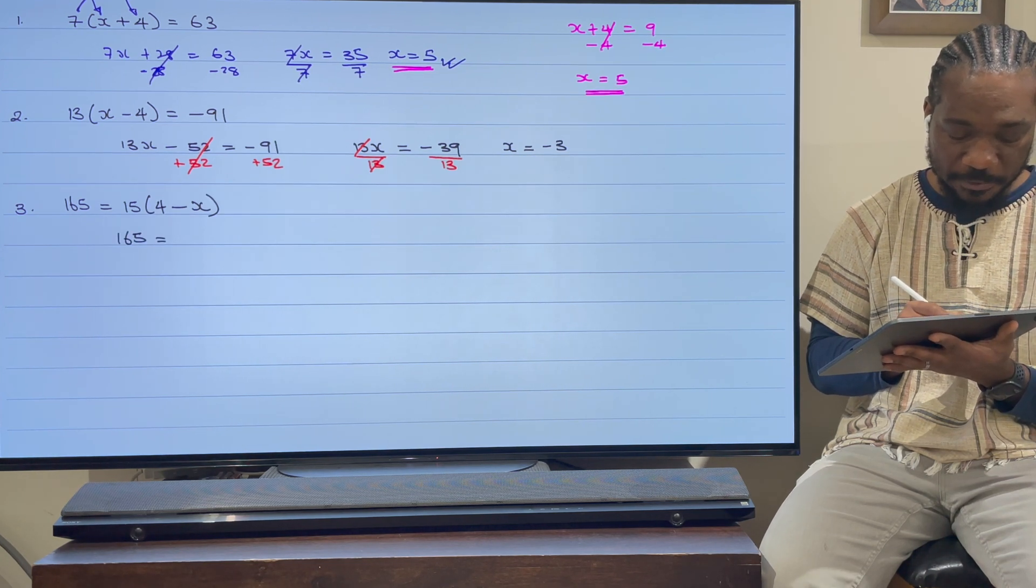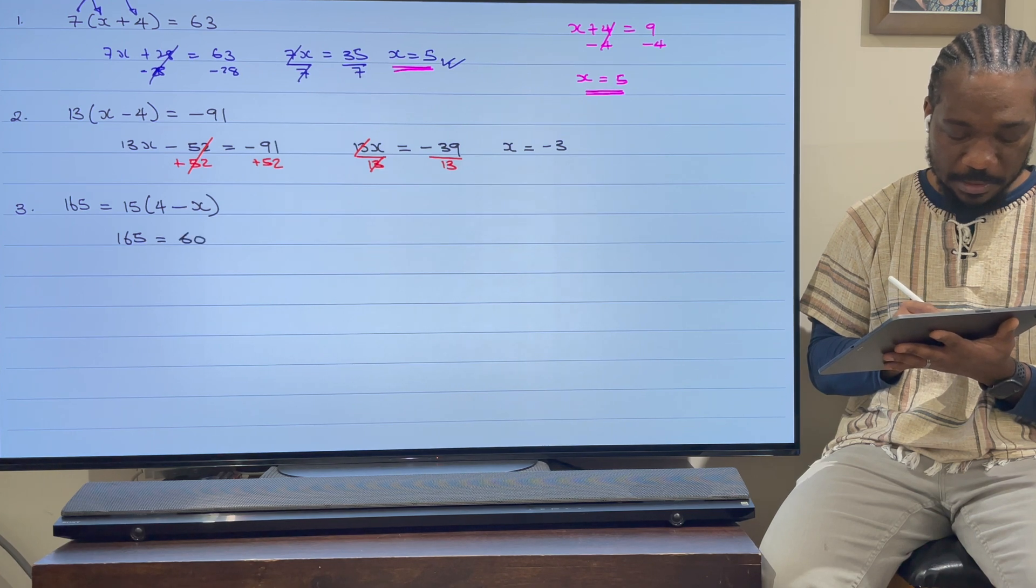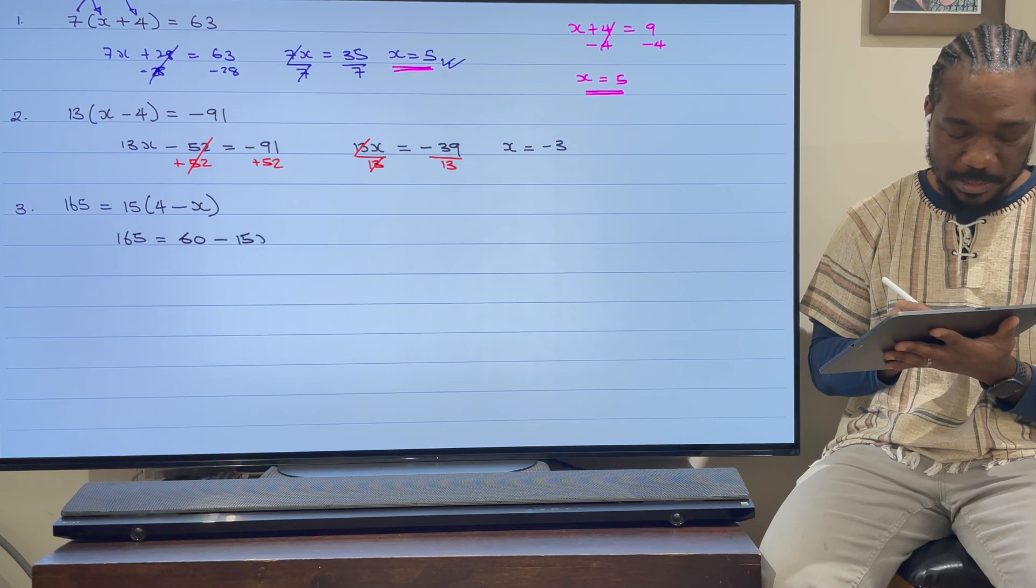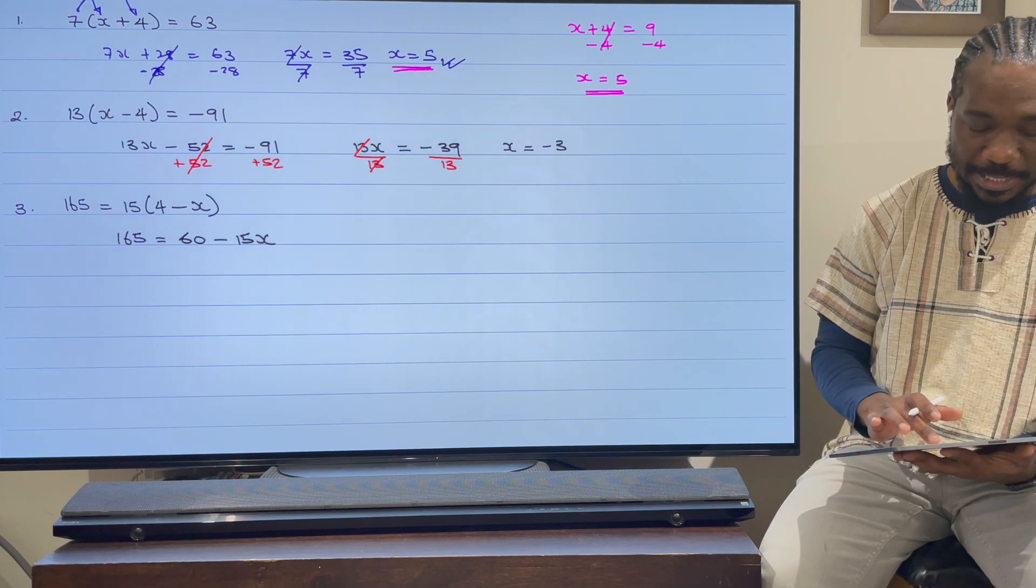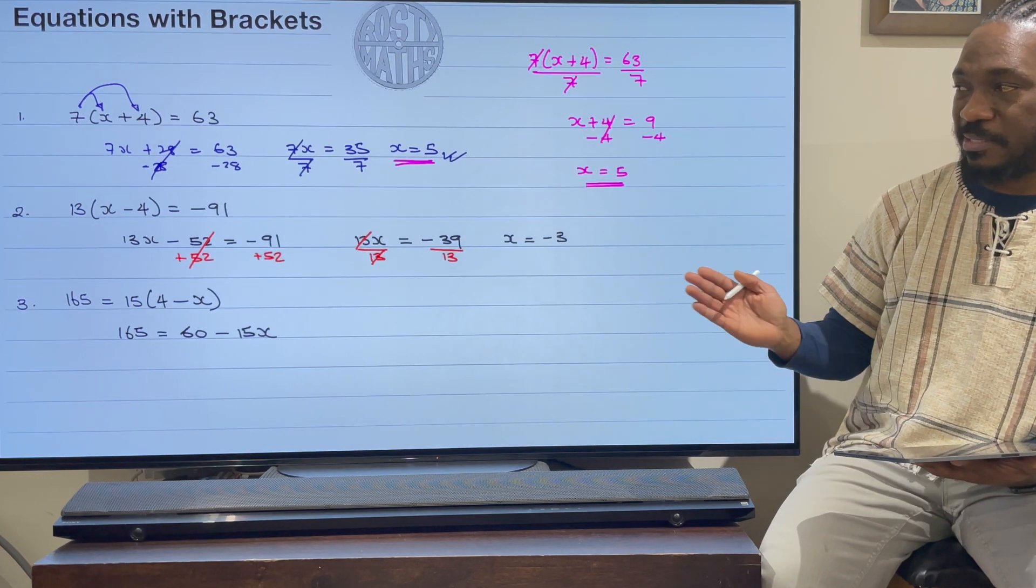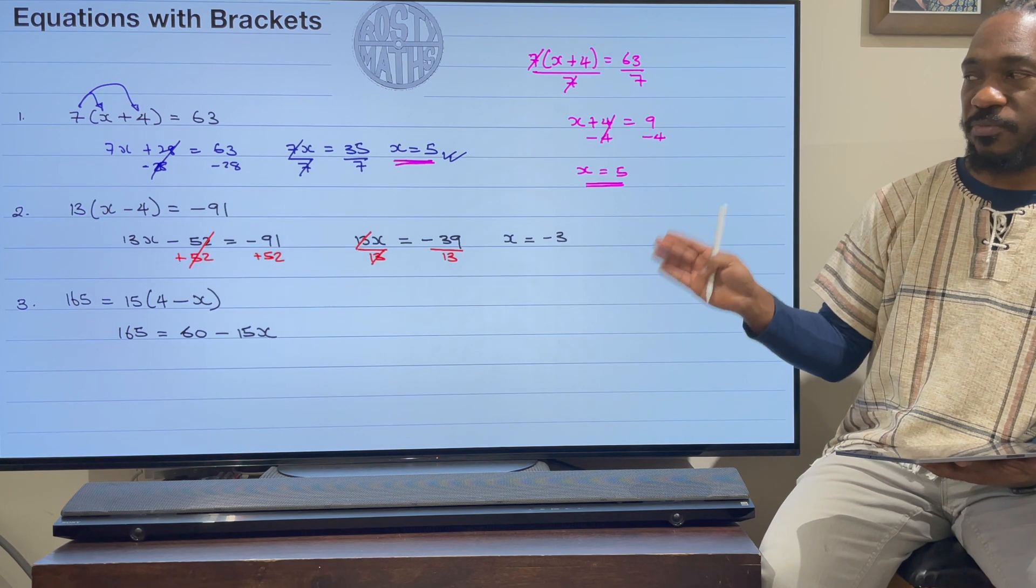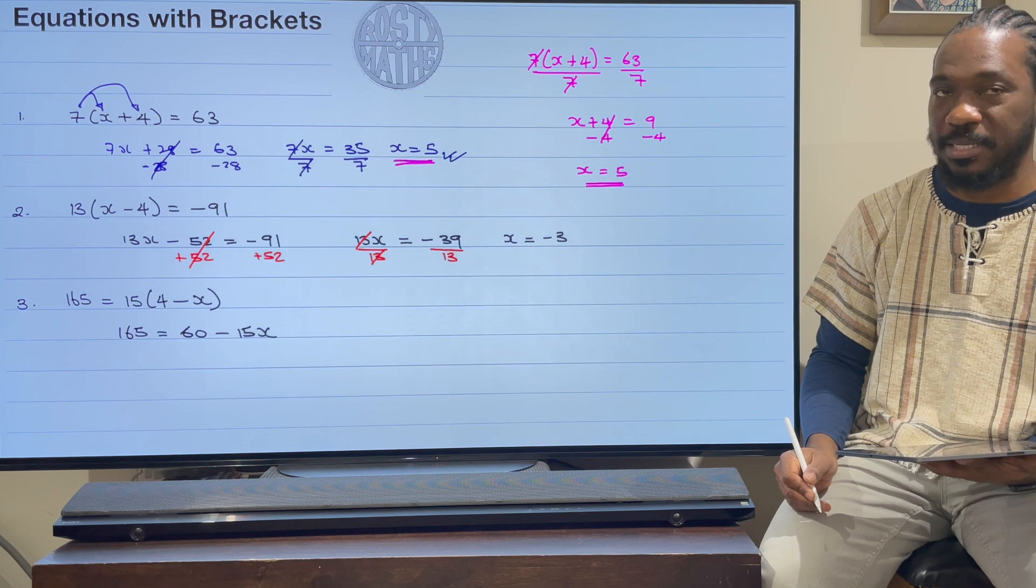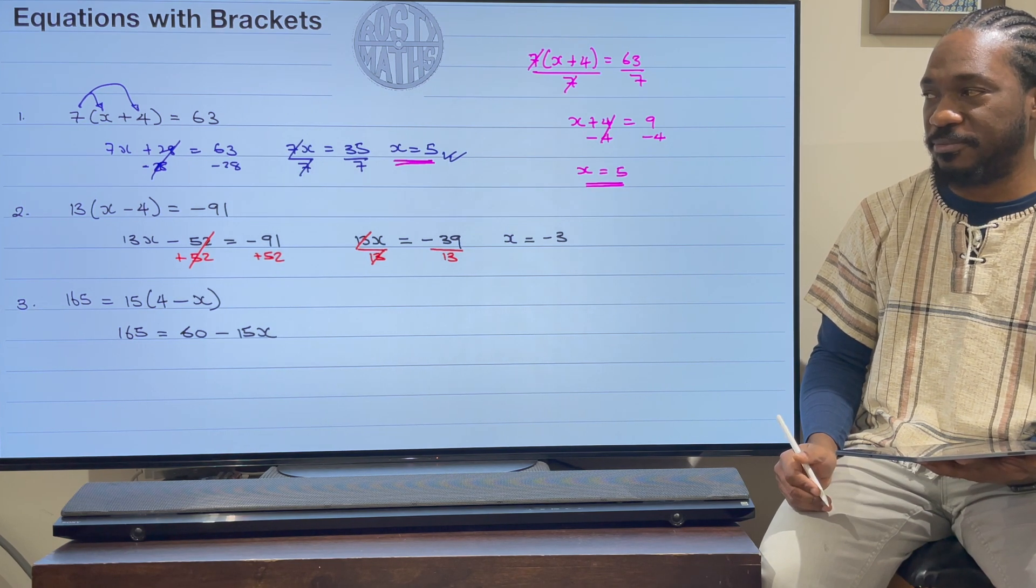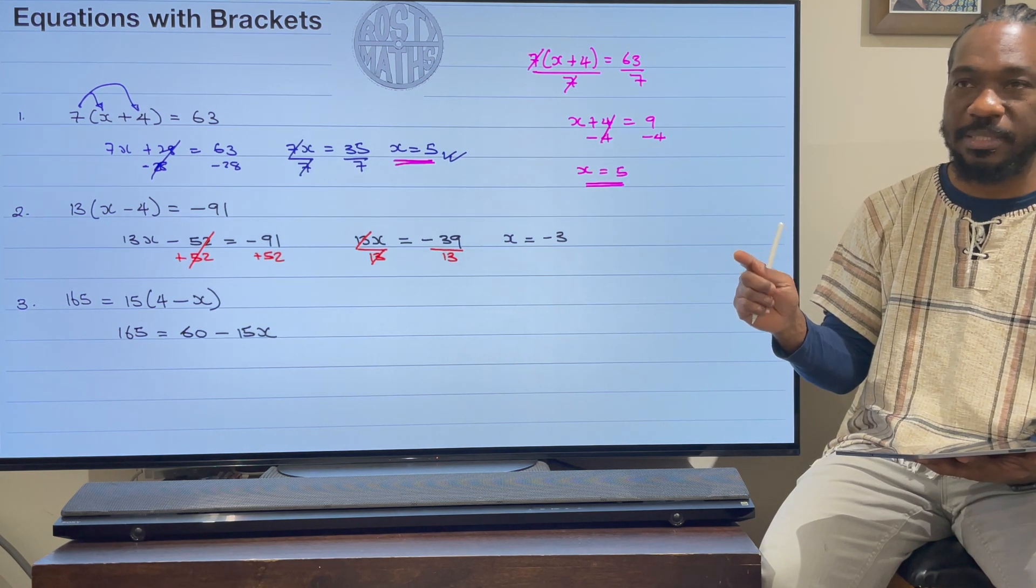So I'm going to have 165 is equal to 15 times 4 is 60, take away 15x. Really important here, guys, that you understand that it does not matter which side of your equation your x is on. It works out in exactly the same way. So we're not going to get fussed. I'm not going to switch this around. I'm just going to keep it as is and work it out.